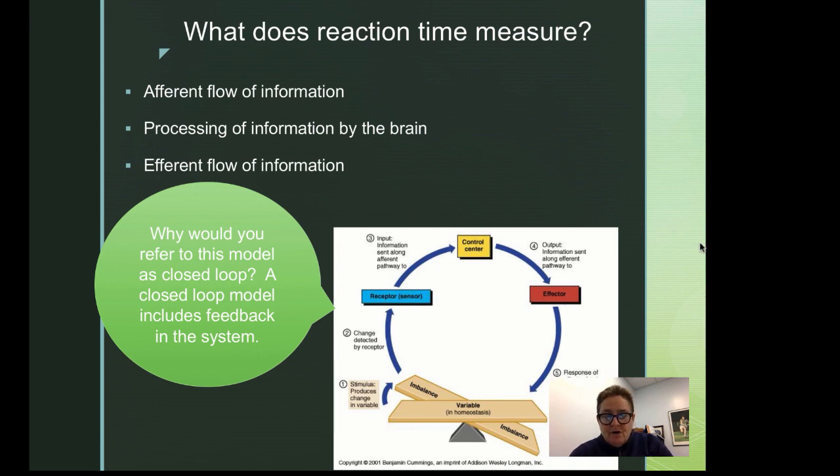So I want you to notice here in this model, you have a variable and homeostasis. In other words, not a lot is happening there. But once a stimulus produces a change in the variable, notice the imbalance in the system. And these imbalances are then detected by a receptor or sensor. And then it goes through the afferent pathways to the control center. This is what we're calling central processing.